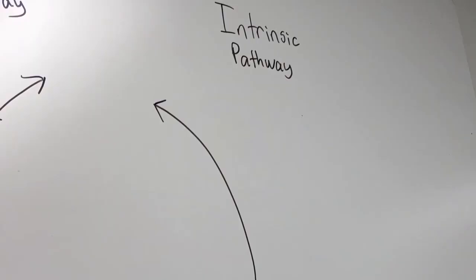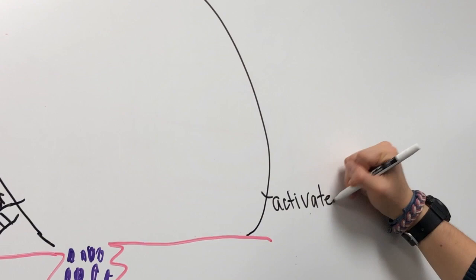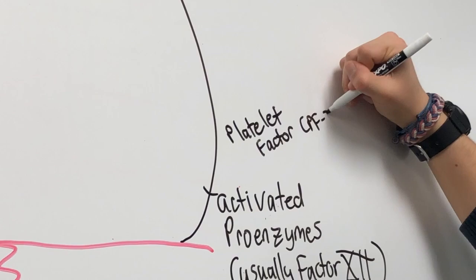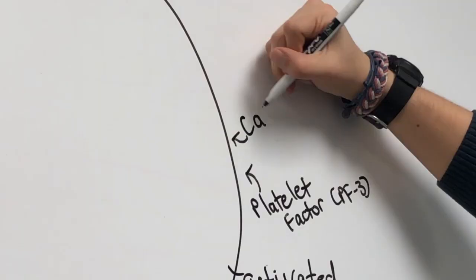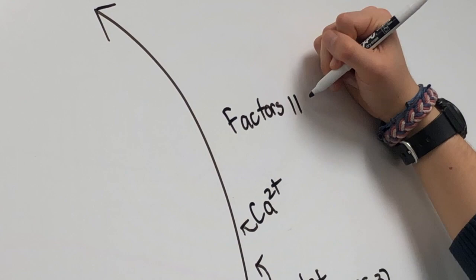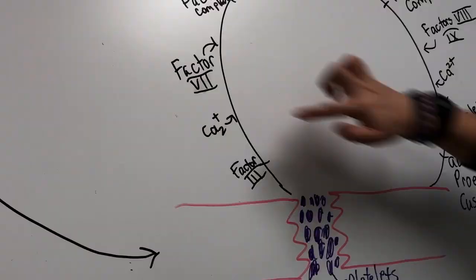In the intrinsic pathway, activated proenzymes, or clotting proteins, which are usually factor 12, with the assistance of platelet factor PF3, which combines with calcium in order to accelerate the activation of factors 8 and 9, which go on to form the factor 10 activator complex.